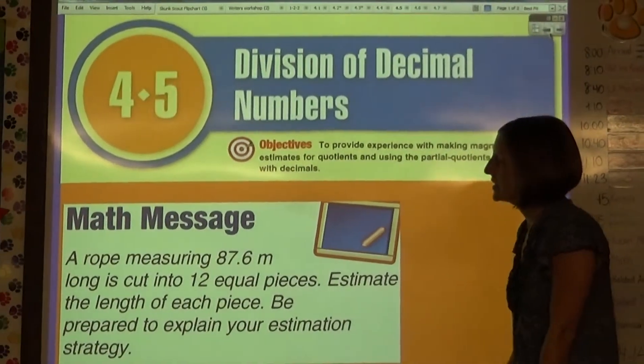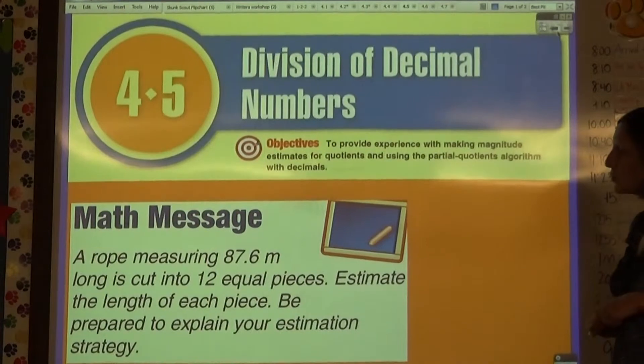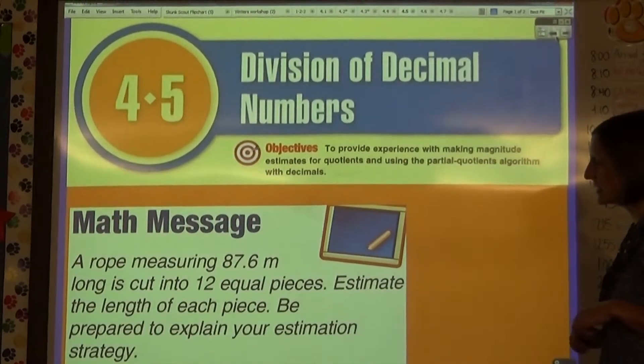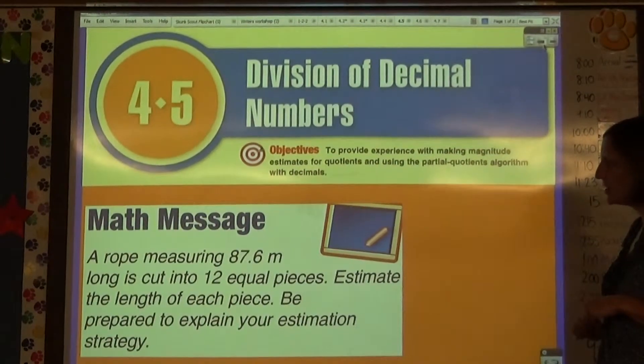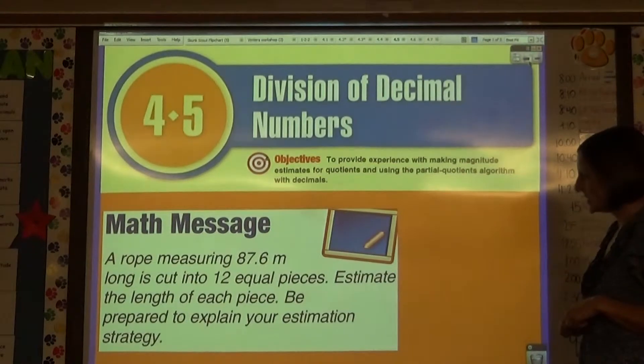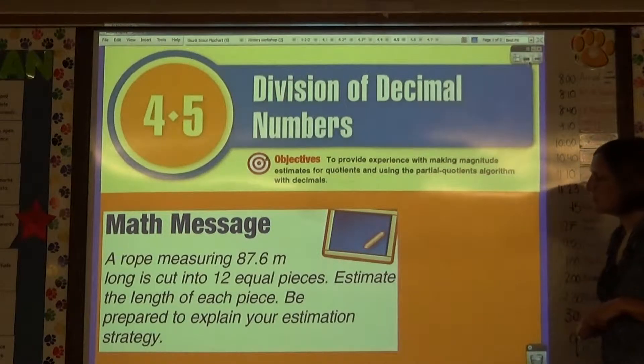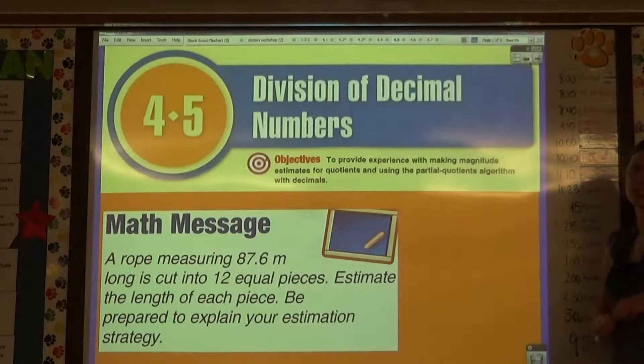Our math message asks us to do some estimating. It says a rope measuring 87.6 meters long is cut into 12 equal pieces. Estimate the length of each piece. Be prepared to explain your estimation strategy.